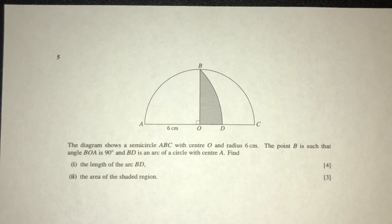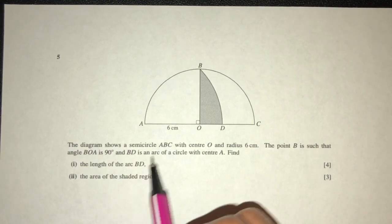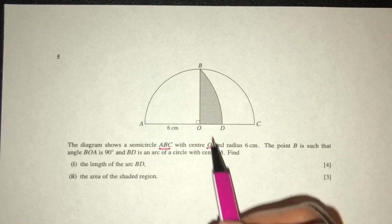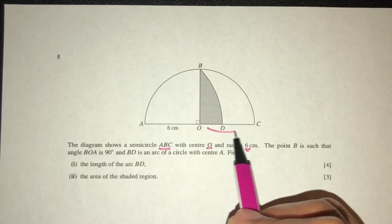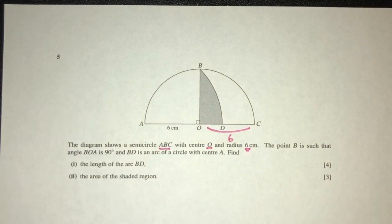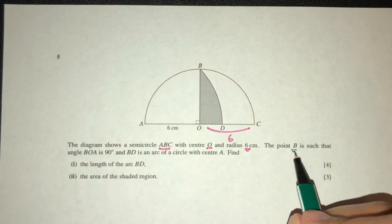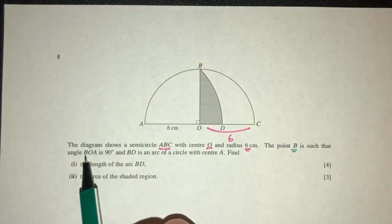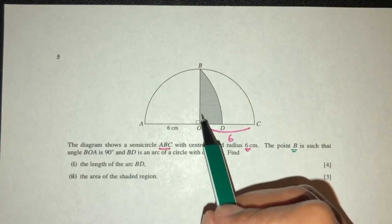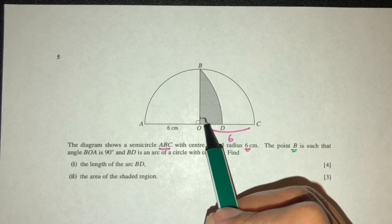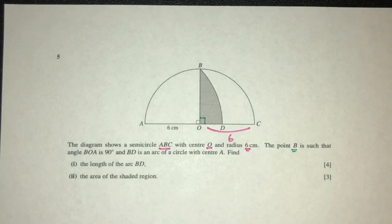Let's move on to the next question. The diagram shows a semicircle ABC with center O right here, and radius 6. This is 6, this also will have to be the value of 6. The point B is such that the angle BOA is 90, so BOA is 90, which means BOC is also 90.